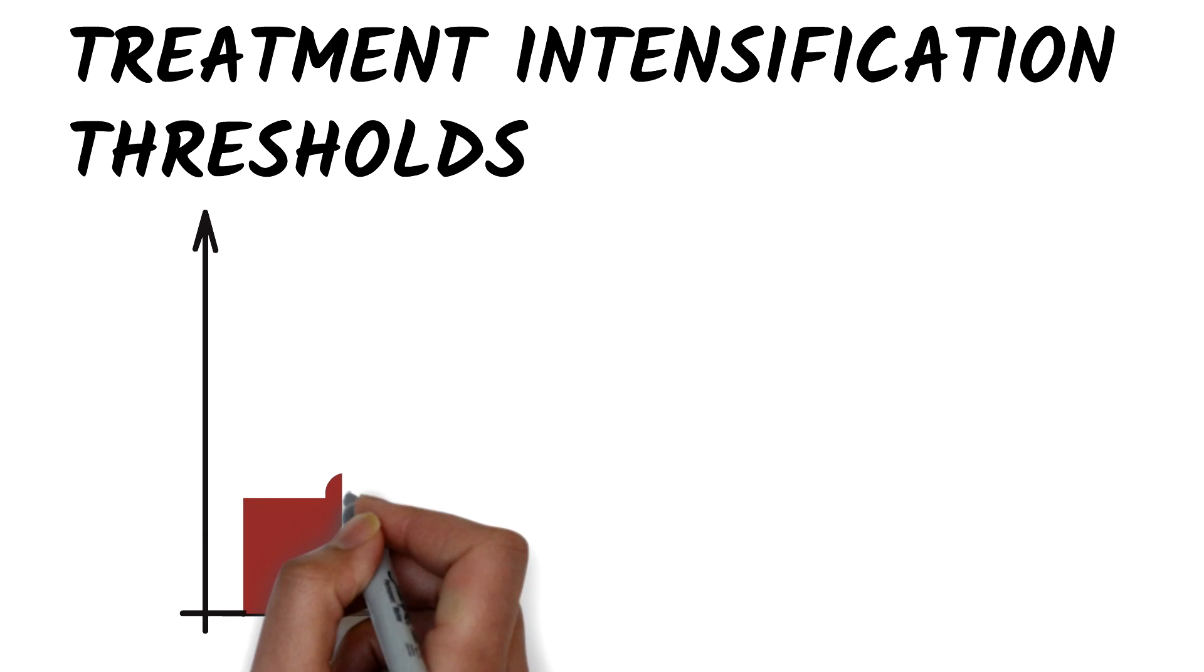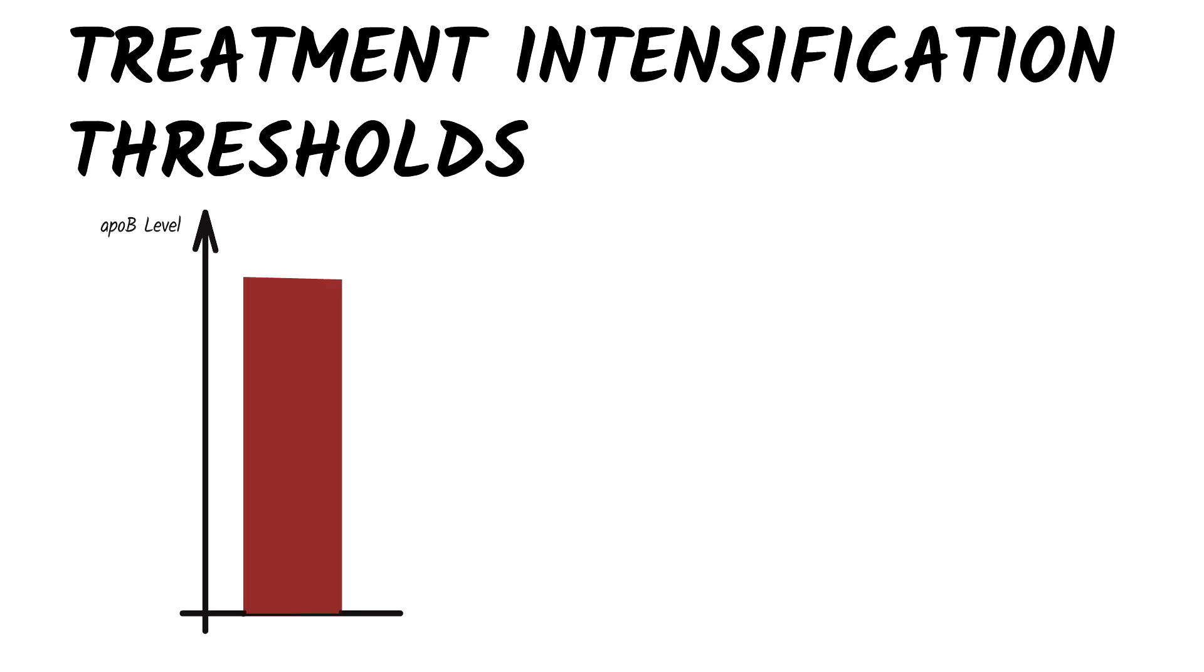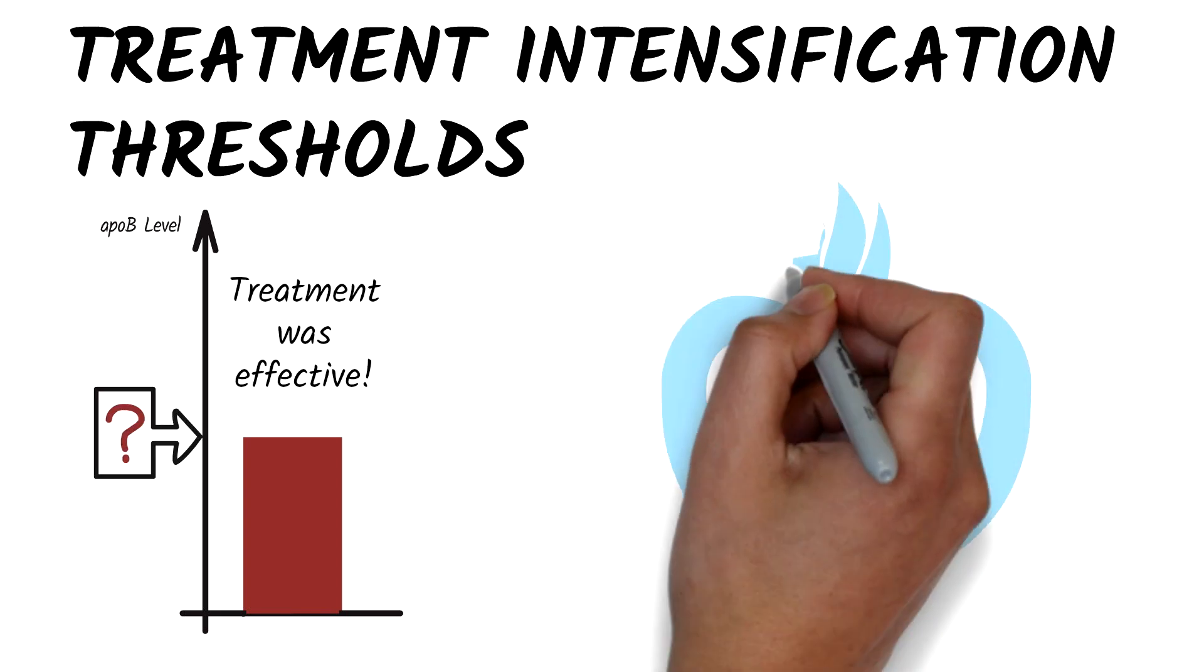Now, let's talk about treatment intensification thresholds. How low should your patient's ApoB level be for you to consider that your treatment has been effective? The 2021 Canadian Cardiovascular Society lipid guidelines provide some insight.